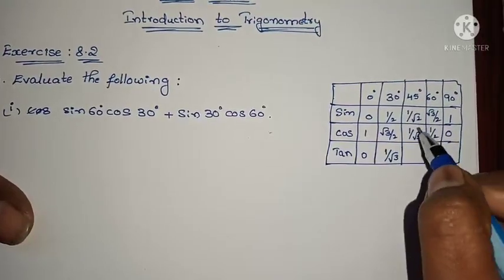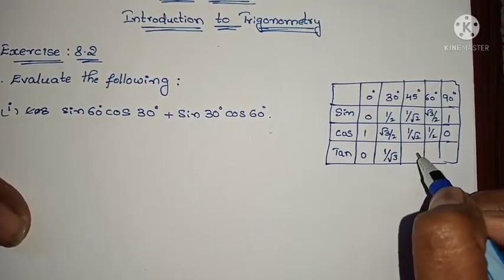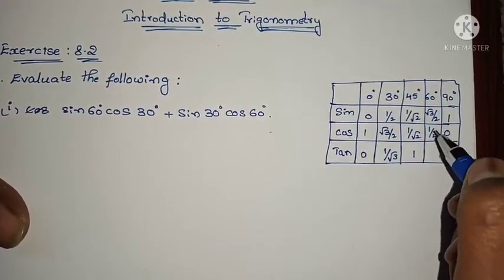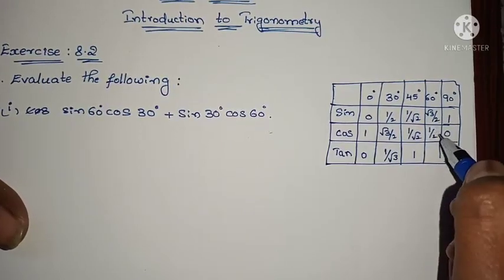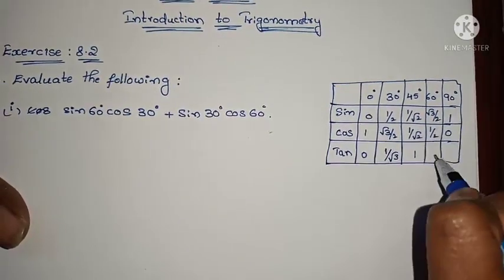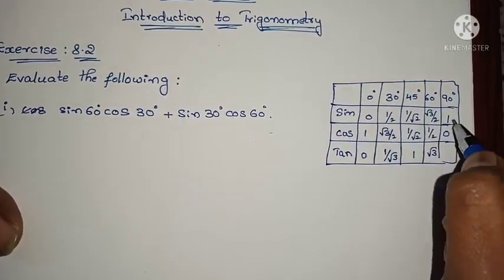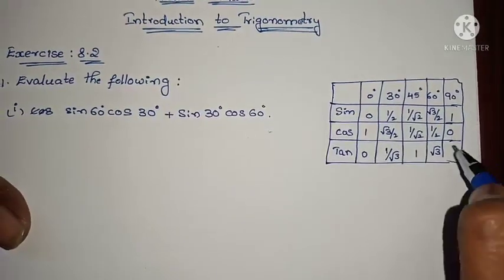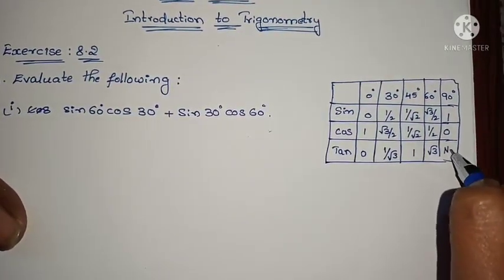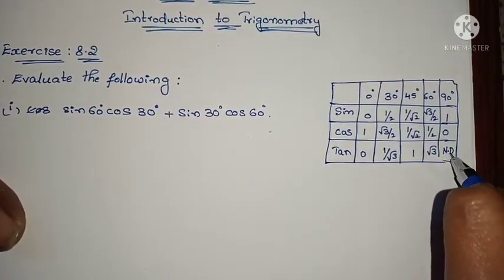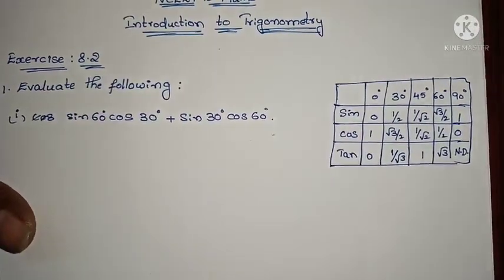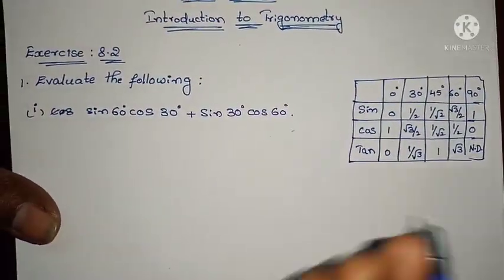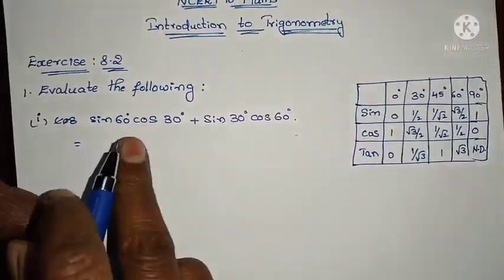Here, 1/√2 divided by 1/√2 — cancel — you get 1. After that, √3/2 divided by 1/2 — the 2s cancel — giving √3. And 1 divided by 0 is not defined, or you can write it as infinity. All the values are here now — very easy to solve the problem.